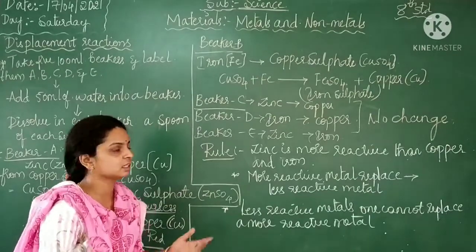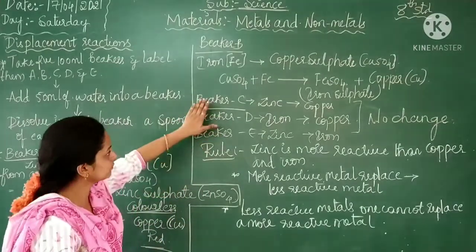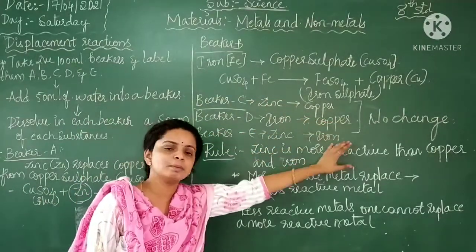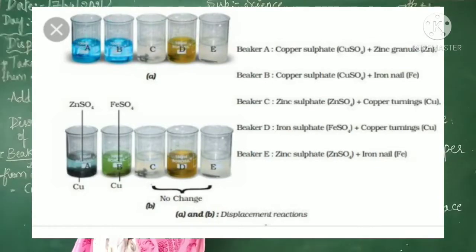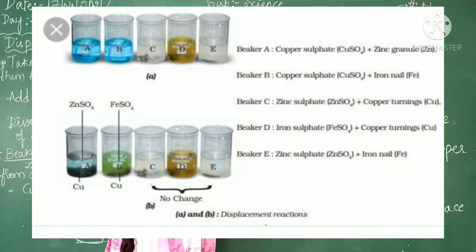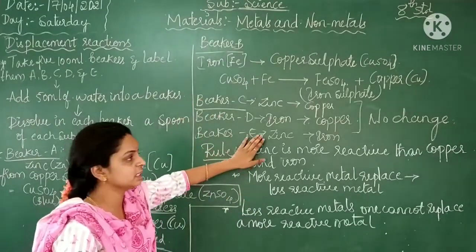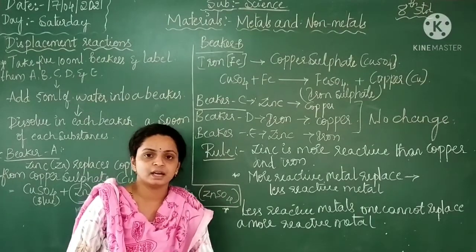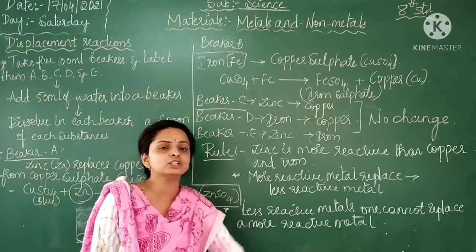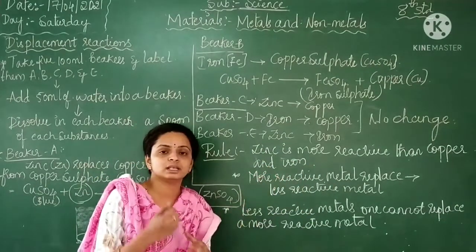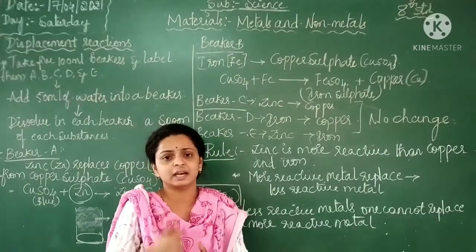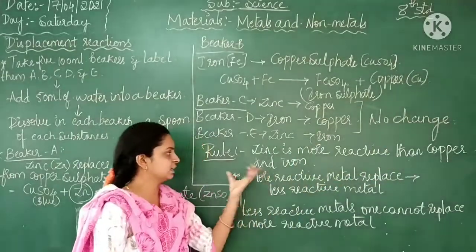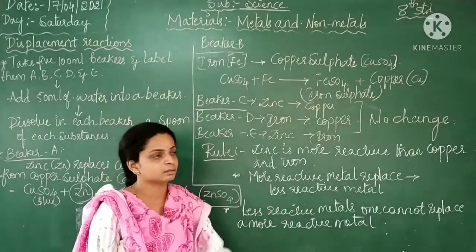Next, what changes occur in beaker C, D, and E? In beaker C, zinc replaces copper. In beaker D, iron replaces copper. In beaker E, iron replaces iron. But in case of beaker D and beaker E, there is no change — no replacement of one metal with another — because zinc is more reactive than copper and iron. The more reactive metal contains stronger basic nature, that's why there is no change in beaker D and E.